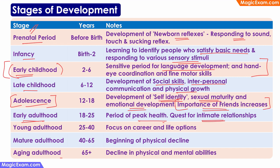In young adulthood, the person starts focusing more on career and life options. When the person reaches mature adulthood, this marks the beginning of physical decline, where physical health starts to decline gradually. In aging adulthood, the decline in both physical and mental capabilities becomes quite rapid. You need to remember all the details in this table, as there are quite a few exam questions that can be based on this information.